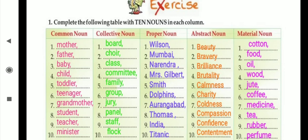Now next we are going to see the last one, material noun, and the ten examples of that: cotton, food, oil, wood, juice, coffee, medicine, tea, rubber, and perfume. These all you are going to complete in your textbook.